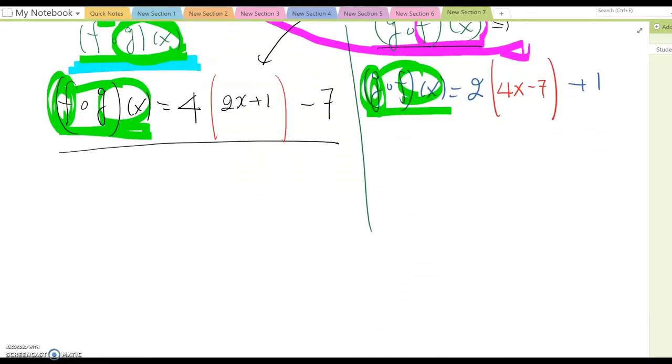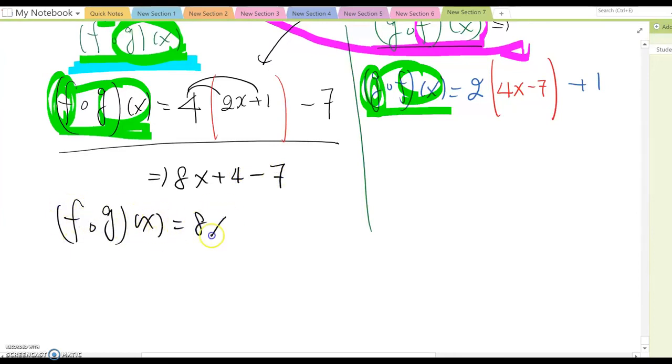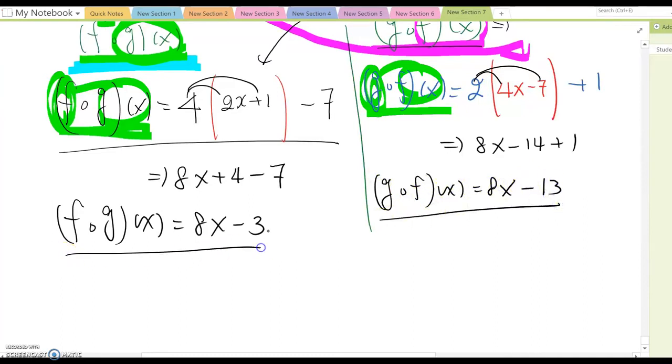So let me simplify. So now you distribute. Then this becomes 8x plus 4 minus 7. Therefore f open dot g(x) means 8x minus 3. And then this becomes 8x minus 14 plus 1. So g open dot f(x) equal to 8x minus 13. That will be the answer for these two composition functions.